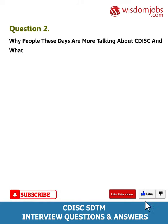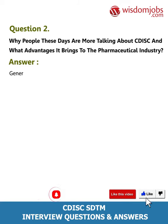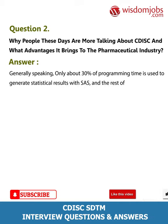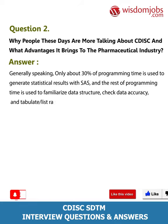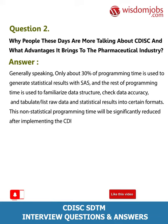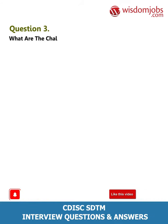Question 2: Why are people these days talking more about CDISC and what advantages does it bring to the pharmaceutical industry? Answer: Generally speaking, only about 30% of programming time is used to generate statistical results with SAS, and the rest is used to familiarize data structure, check data accuracy, and tabulate or list raw data and statistical results into certain formats. This non-statistical programming time will be significantly reduced after implementing CDISC standards.